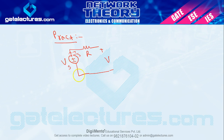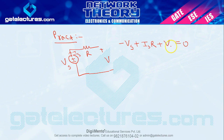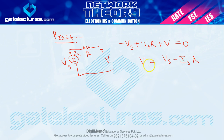To Is jo hai is loop mein flow ho rahi hai. So KVL mein voltage ka algebraic summation zero hota hai. Agar hum clockwise direction mein dekhen to pehla sign Vs ka minus aata hai — so minus Vs. Resistor ke across current kitni hai? Is, to Is into R. Aur is V ka clockwise direction mein pehla sign plus hai to plus V, equal to zero. To V calculate hoga: Vs minus Is into R. To aapka V kya hai? Vs minus Is·R.